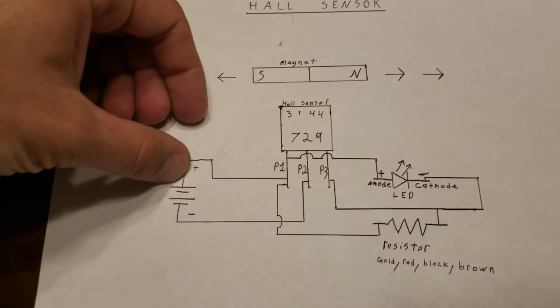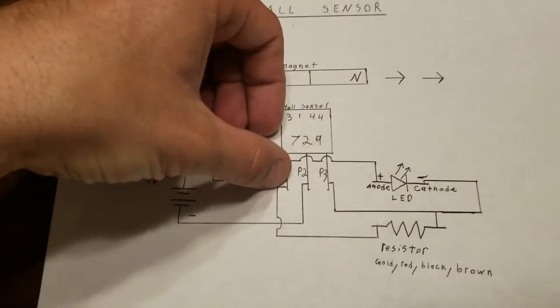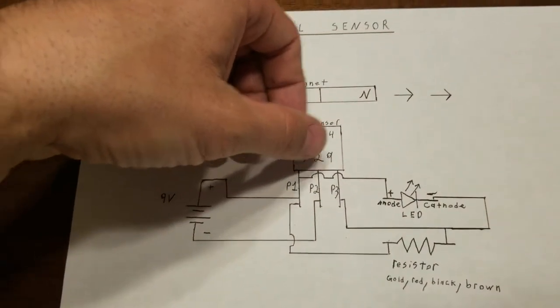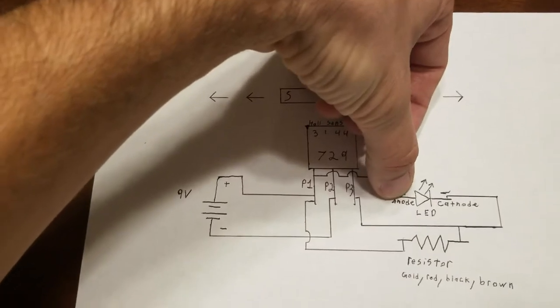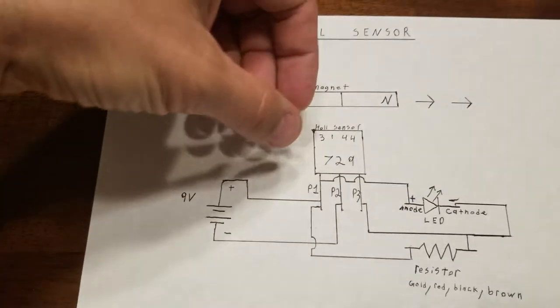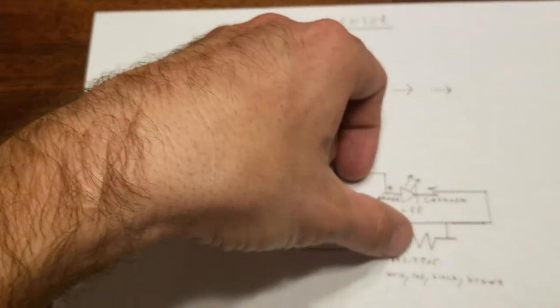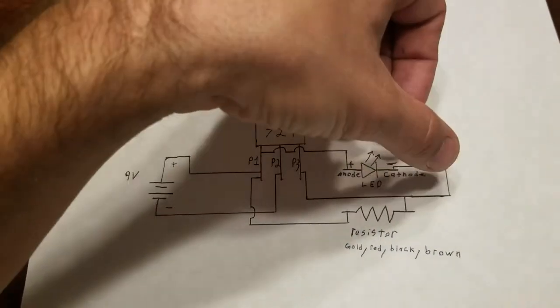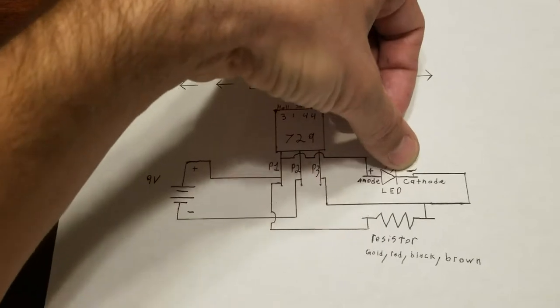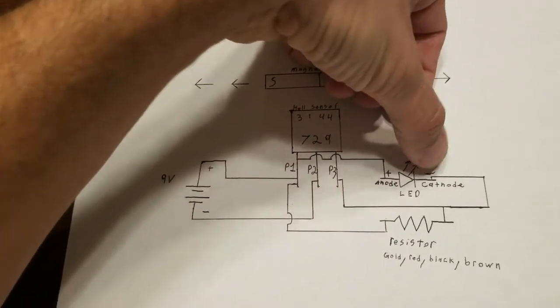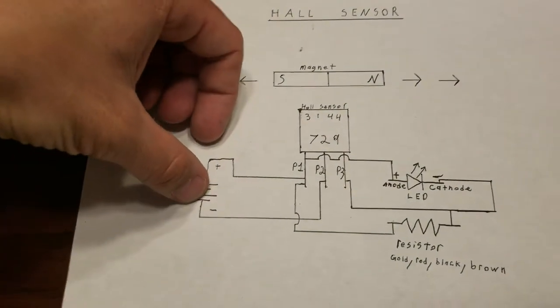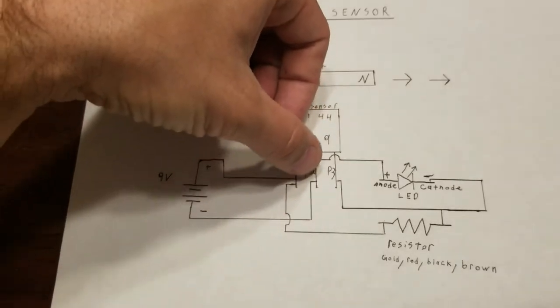What I have here is positive hooked to pin 1 and also hooked to the positive side of the LED. Then I also have it connected on pin 1 over to the resistor, going through the resistor and onto the negative side of the LED. I have the negative side of the battery coming over and connecting to pin 2.